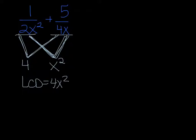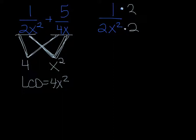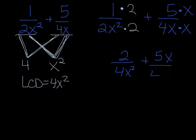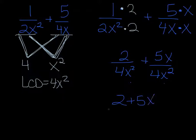In order to make 1 over 2x squared into something with a 4x squared on the bottom, I'm going to have to multiply top and bottom by 2. Then I have plus 5 over 4x, and I want to make that 4x squared, so I have to multiply it by another x — and since you do it to the bottom, you have to do it to the top. So now I have 1 times 2 is 2 over 4x squared, plus 5 times x is 5x over 4x squared. Now that I have a common denominator, I can put the 2 and the 5x together: 2 plus 5x on top, and 4x squared on the bottom.